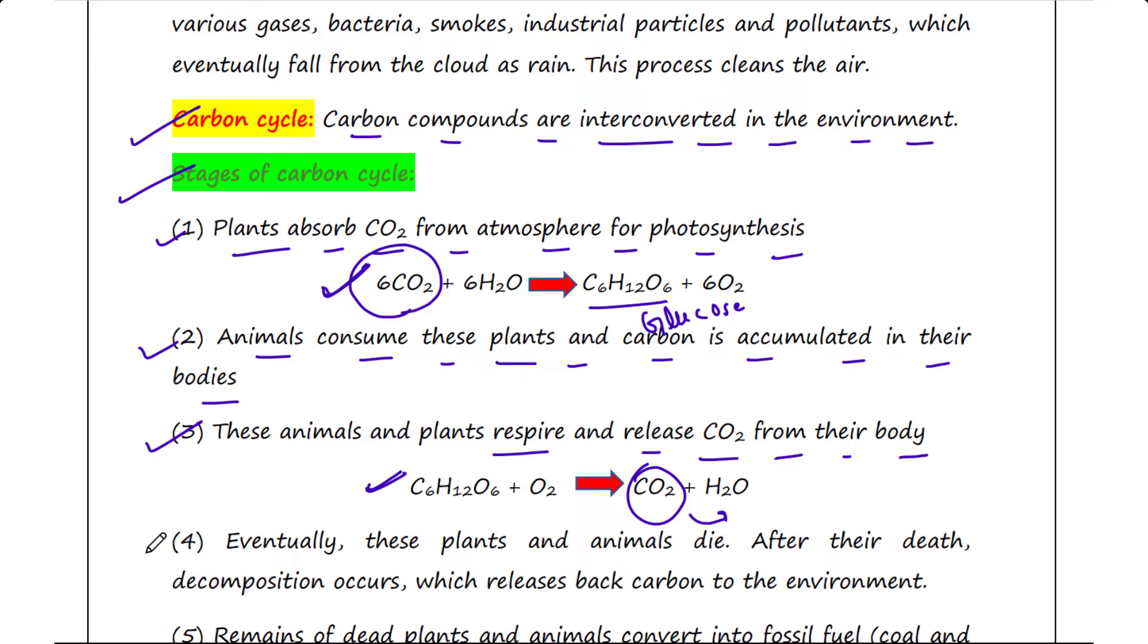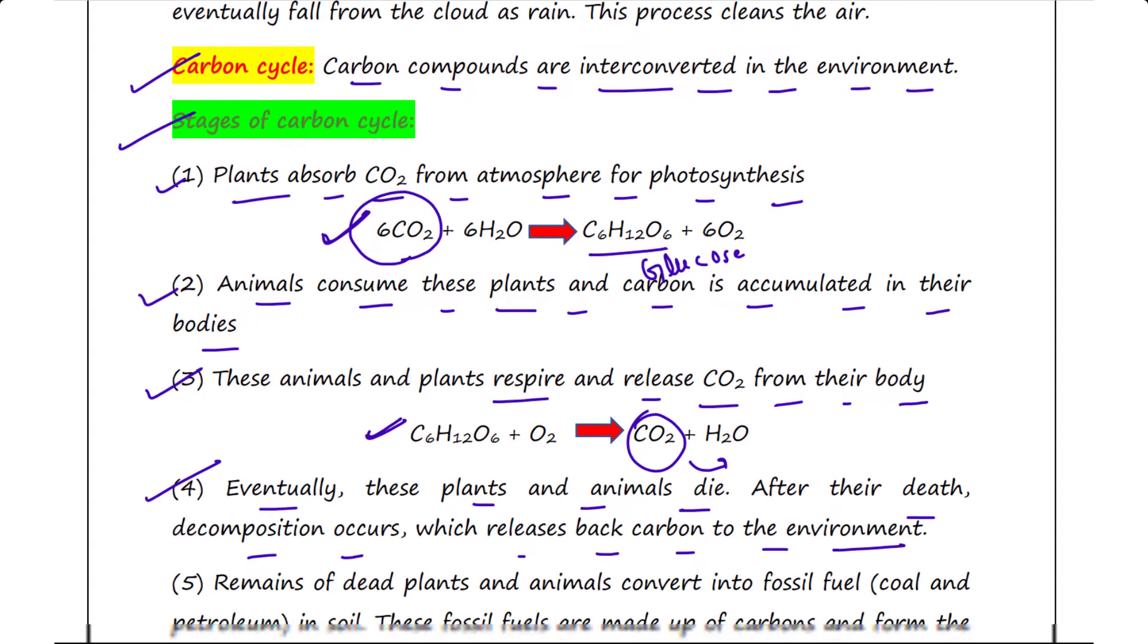Step four: eventually, these plants and animals die. After death, decomposition occurs, which releases carbon back to the environment. Decomposition is a process that breaks down the organic materials present in plants and animals' bodies and releases carbon to the environment.